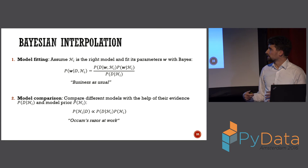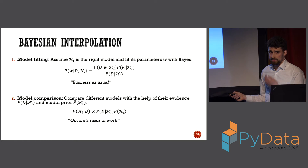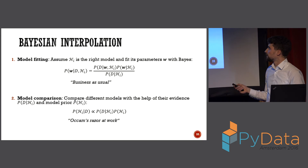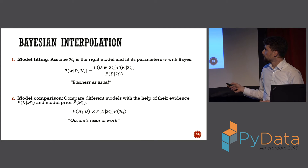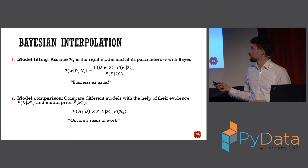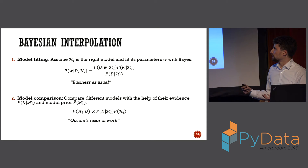To sum up: we have two steps of inference, and this is the idea behind Bayesian interpolation. The first step is the model fitting step — this is what we normally do. We assume one model H_i is the right model and fit its parameters. In the Bayesian way, this is the posterior over the parameters: likelihood times prior divided by the evidence. We can maximize this via gradient methods and normally don't even need the evidence, but it's written here for completeness.